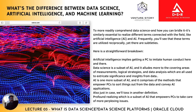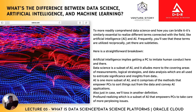Coming to the next part — what is the difference between data science, artificial intelligence, and machine learning? The straightforward breakdown says that artificial intelligence, or AI, implies getting a PC to imitate human behavior. Data science is a subset of AI, and it alludes to over-covering areas of measurements, logical strategies, and data analysis, which are all used to extract significant insights. So data science is a sub-field within the artificial intelligence domain.